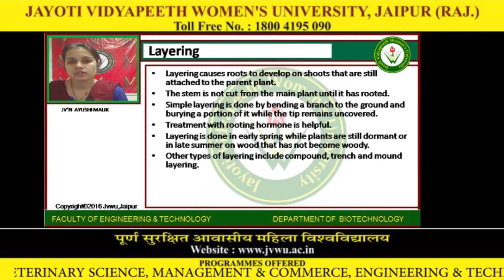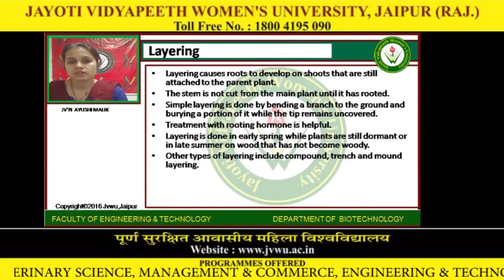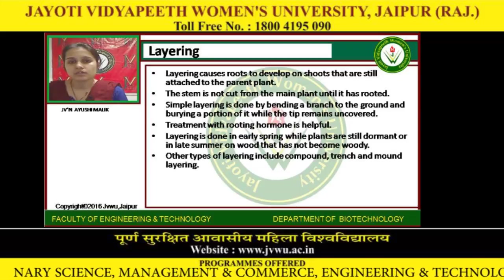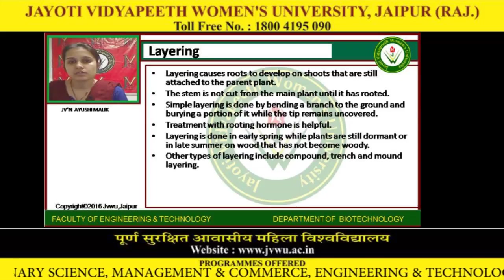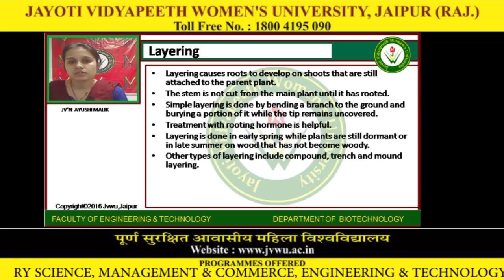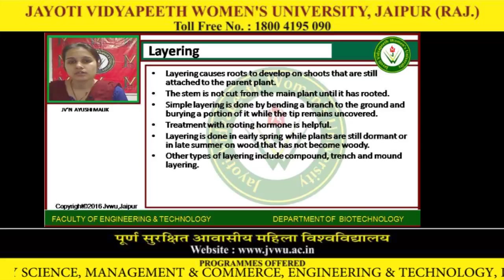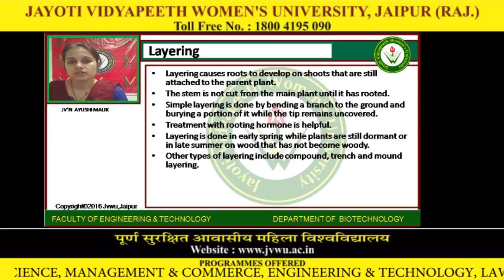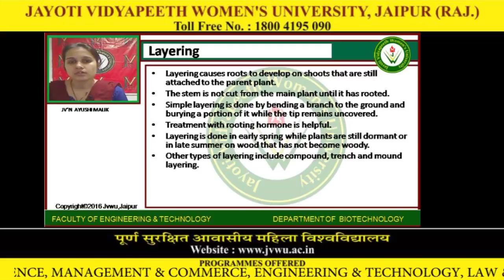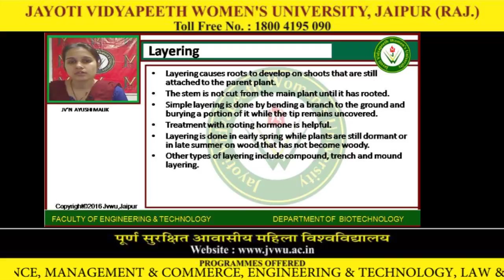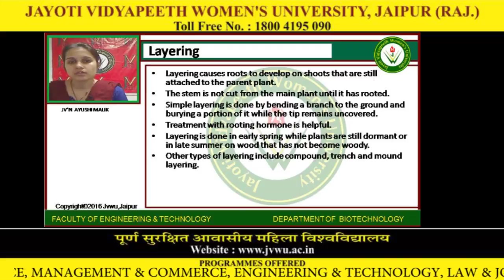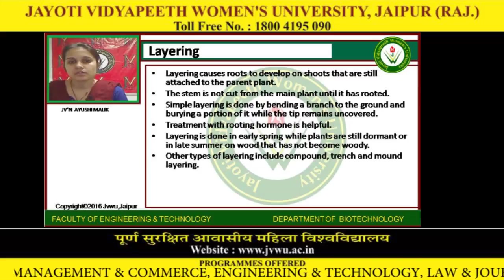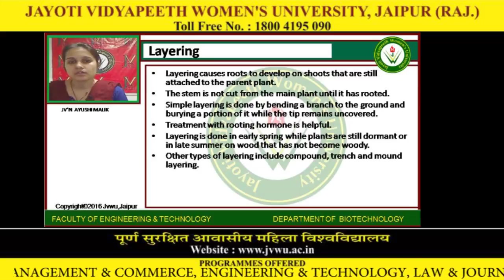Layering causes a root to develop on a shoot that is still attached to the parent plant. The stem is not cut from the main plant until it has rooted. Simple layering is done by bending a branch to the ground and burying a portion of it while the tip remains uncovered. Treatment with rooting hormone is helpful.